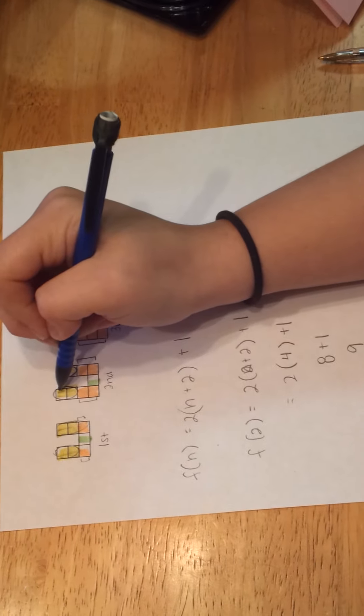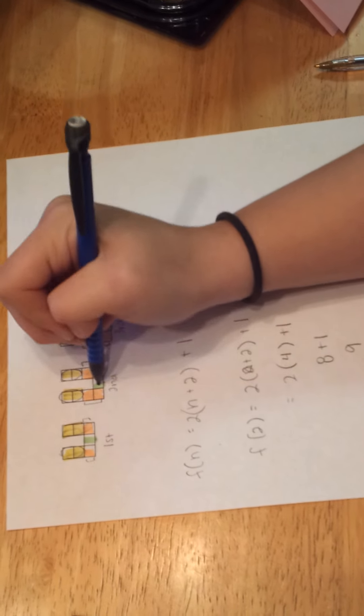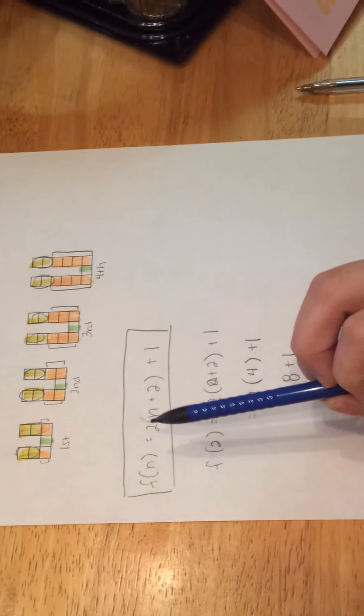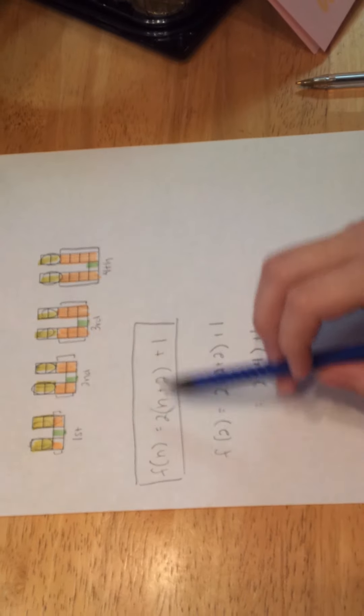And when we count 1, 2, 3, 4, 5, 6, 7, 8, 9, there are 9 blocks. So this formula here can work with any function. So any function of n can use this formula and this formula. And that's all.